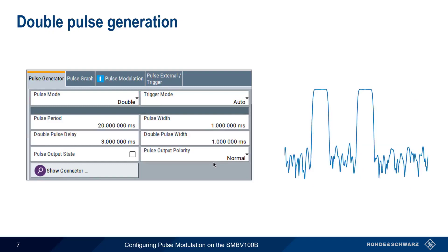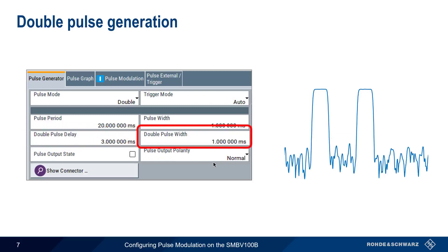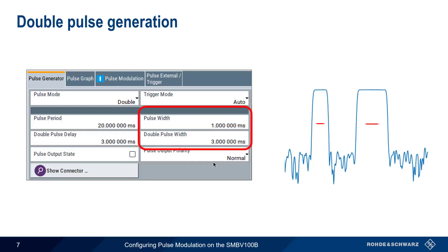In double pulse mode, pairs of pulses are sent. Because we're sending two pulses each time, we now have the double pulse delay, which is the time from the start of the first pulse to the start of the second pulse in the pair. In addition, we need to define the width of the second pulse. Note that the width of these two pulses can be the same, or it can be different.